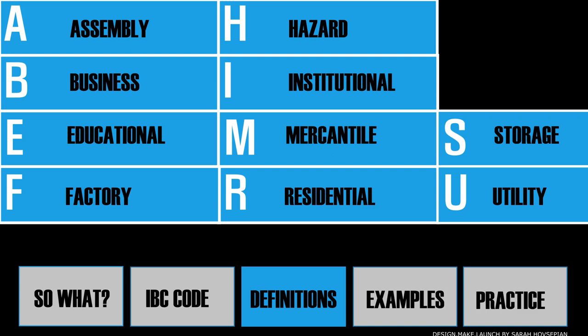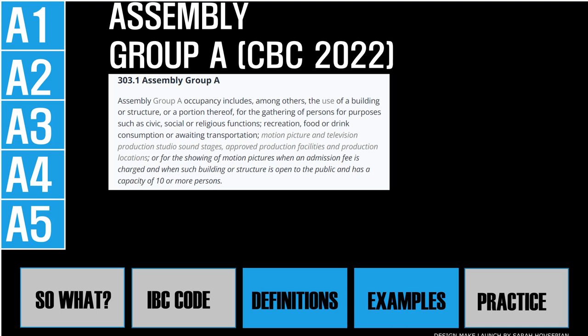By no means should you attempt any exam, especially the NCARB ARE exams, if you have not read the sections for these codes. Group A — Assembly occupancies are the use of a building or structure for the gathering of persons for civic, social, religious functions, recreation, food or drink consumption, or awaiting transportation. These uses bring large groups of people together in relatively small spaces. Group A occupancies have 50 or more occupants. Pay attention to numbers — if an assembly occupancy turns out to be fewer than 50 people, it could be classified as B occupancy for business. Always read the entire code section, including any exceptions.